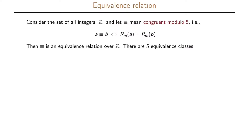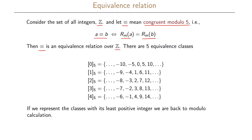Here is an example of an equivalence relation. Consider the set of all integers Z and let the equivalence relation mean congruent modulo 5. This means A is equivalent to B if the remainder when we divide A by M is the same as the remainder when we divide B by M. In this case there are five equivalence classes: where the remainder is 0, 1, 2, 3, or 4 when dividing by five. Each class contains an infinite number of elements, and if we represent each class by its least positive integer we are back to modular arithmetic.